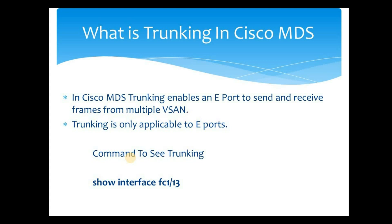One limitation here is that trunking is only applicable to E ports in Cisco MDS, whereas in Brocade it was applicable to both F port and E port. In Cisco MDS it is only applicable to E ports. If you want to check whether a port is enabled for trunking, you use the command show interface followed by the interface name — for example, show interface FC1/13.